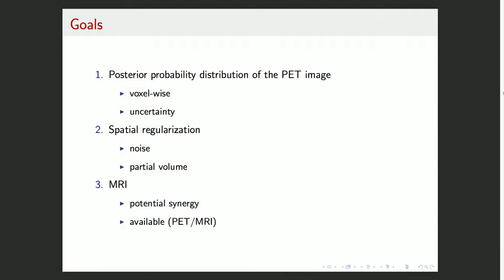Arkadius already convinced you why we want to get the entire posterior probability distribution of the PET image. So for each voxel, we have an intensity value and an uncertainty associated to that intensity. Here we have three main goals: the entire posterior distribution, spatial regularization to reduce noise and partial volume effects, and we want to use the MRI because there is a potential synergy between PET and MRI, and it's available. We do have a PET-MRI scanner at our facility.